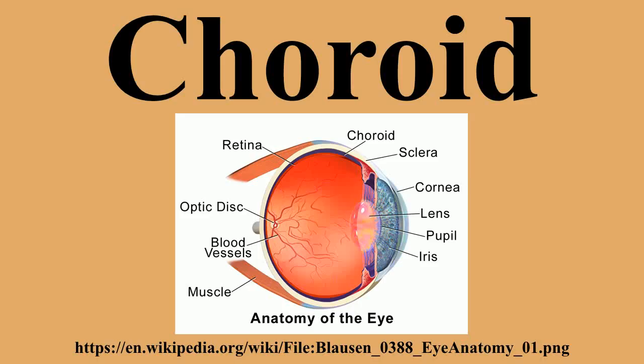They branch in a segmental distribution to the end arterioles and do not anastomose. This is clinically significant for diseases affecting choroidal blood supply. The macula, responsible for central vision, and the anterior part of the optic nerve are dependent on choroidal blood supply.